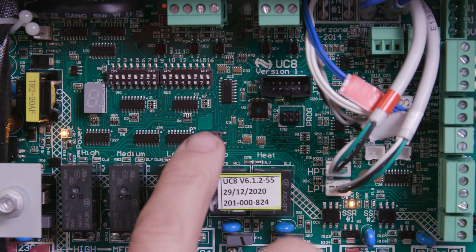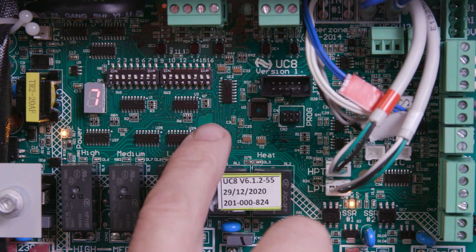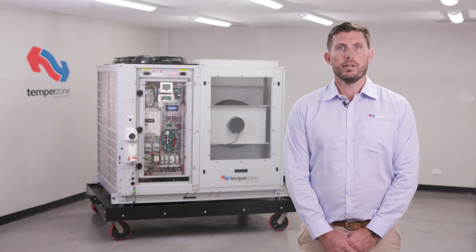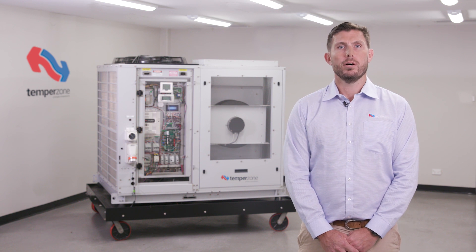The pressure transducer readings can be viewed on the UC8 controller by pressing the SW3 push button. Refer to the instruction sheet supplied on the electrical panel of your TempoZone unit on the operation of the push button.